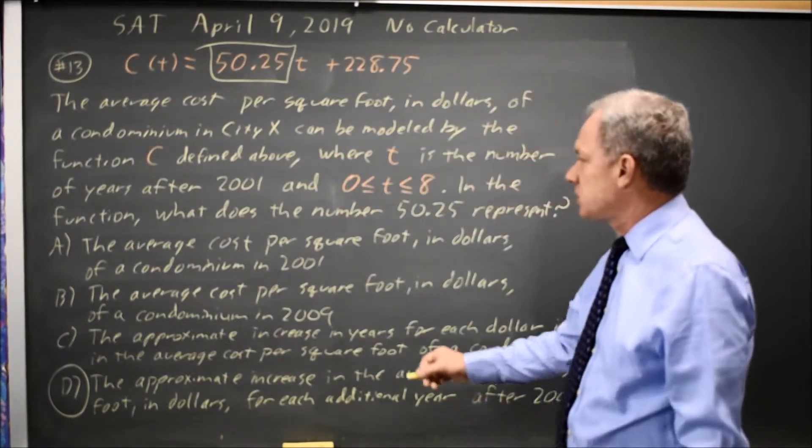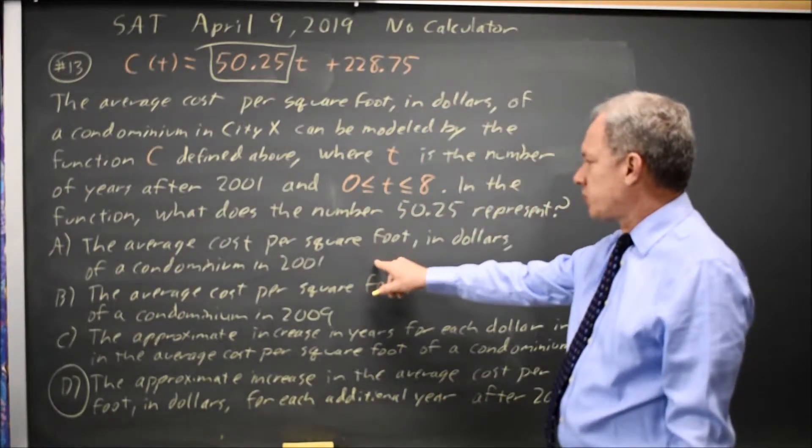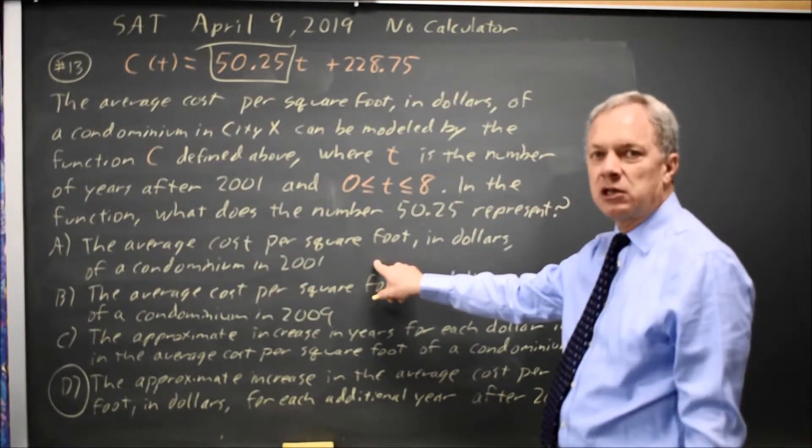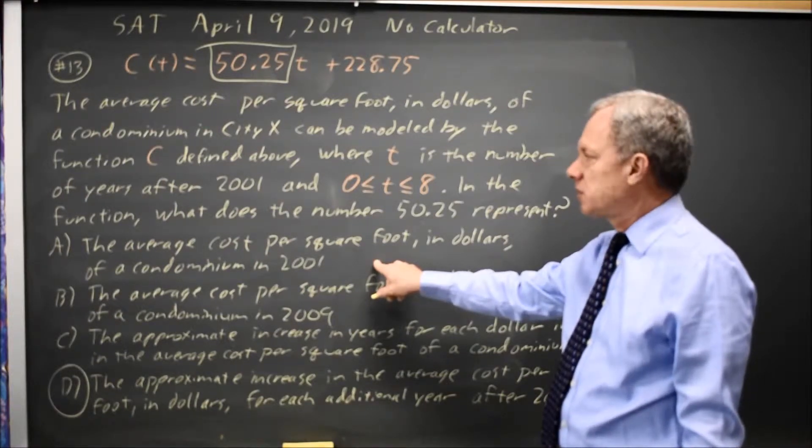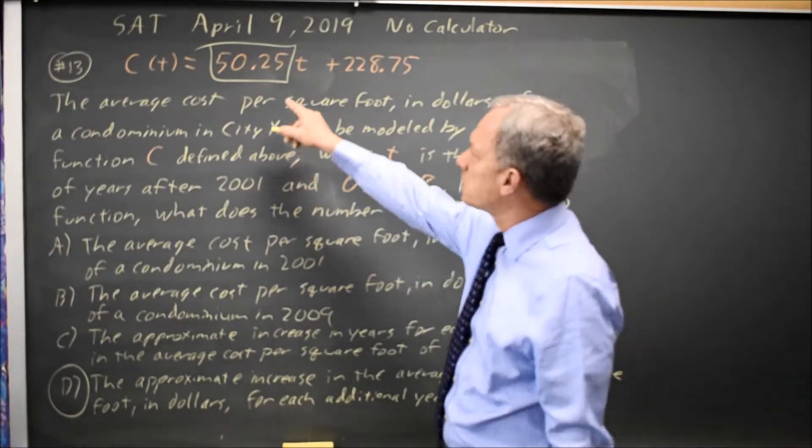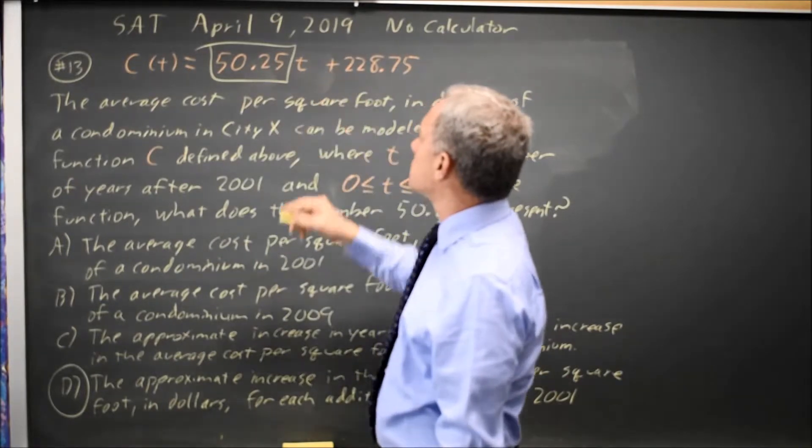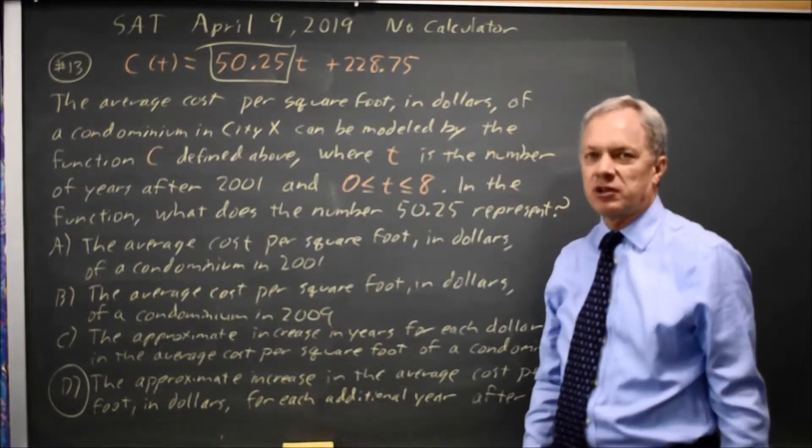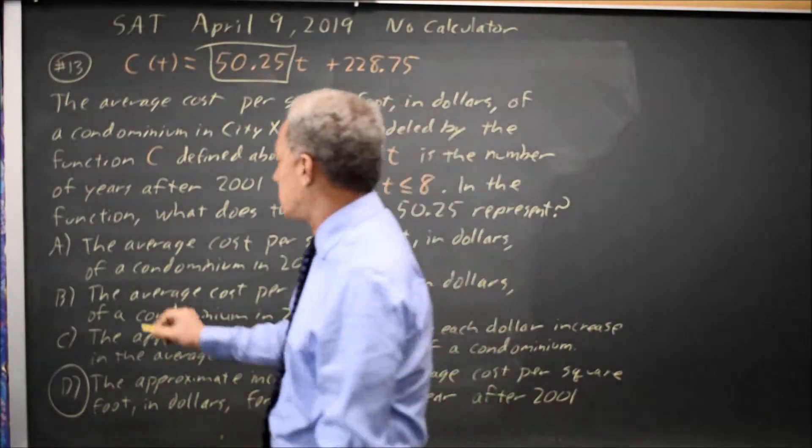Looking at the other answer choices, average cost per square foot in dollars in 2001. 2001 is zero years after 2001. If you put in t equals zero, you get the cost is 228.75, not 50.25. So A is wrong.